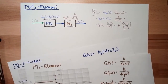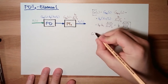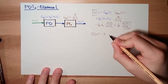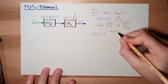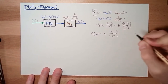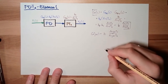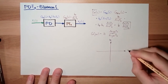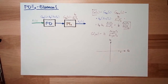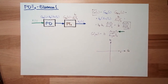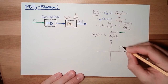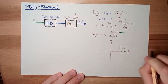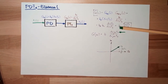Now let's think about what it means for the frequency response. I just have to substitute all S's with jω. On the complex plane — imaginary axis, real axis — here we have 1. Let's think about the upper part: this is ω·T1, this is the upper part.